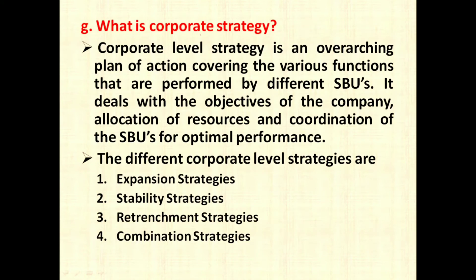The next question is: what is corporate strategy? Corporate level strategy is an overarching plan of action covering the various functions performed by the different SBUs — strategic business units. It deals with the objective of the company, allocation of resources, and coordination of the SBUs for optimal performance. These are framed at the corporate level by top management to look after the overall strategies of the company. It may be divided into expansion strategies, stability strategies, retrenchment strategies, or combination strategies.